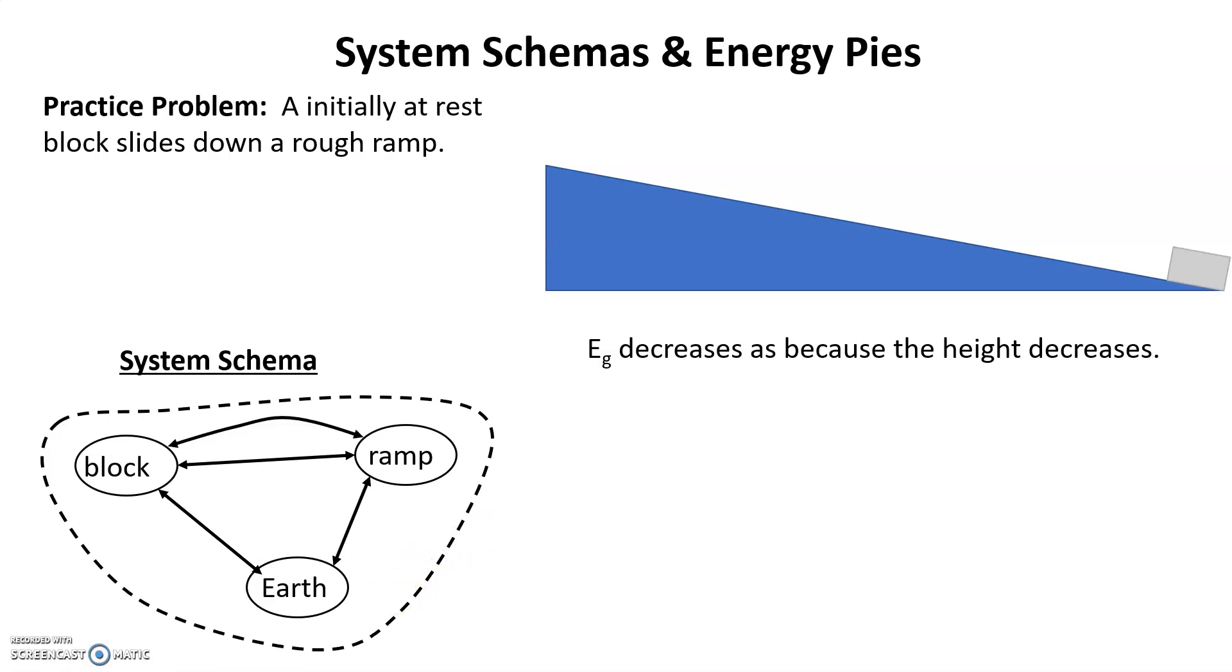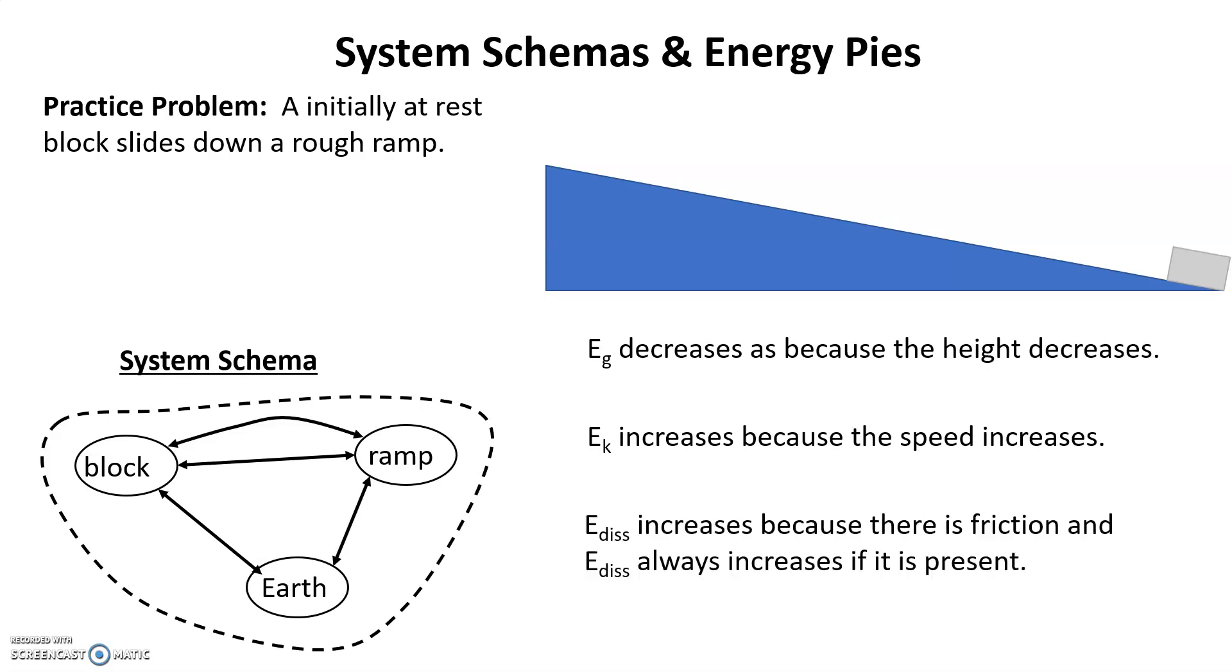As we looked at this block going down the ramp, we saw that the height changed. In fact, it decreased. So that means the EG decreases. But it sped up as it went down the ramp, so the EK increases because the speed increases. Since there is friction and sliding, there's also going to be EDIS. The EDIS increases because there's friction, and EDIS always increases if it's present. I didn't see any springs, so no elastic, and I didn't see any gas or oil or food, so there's no chemical.